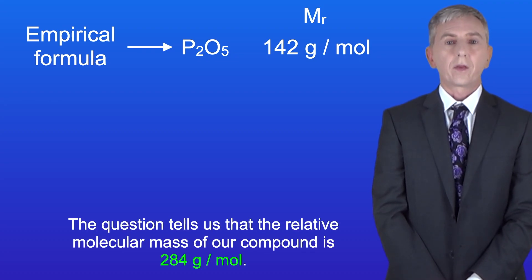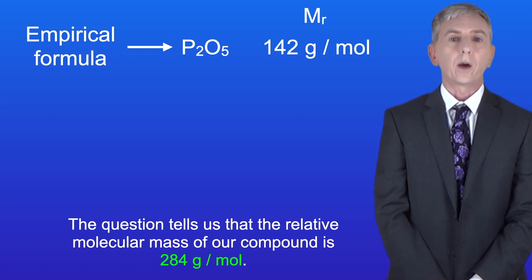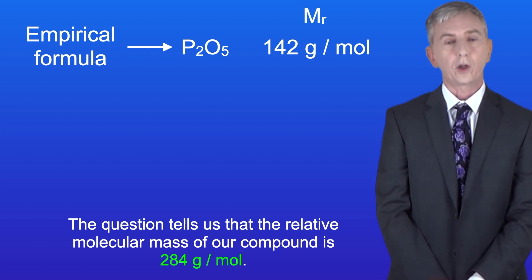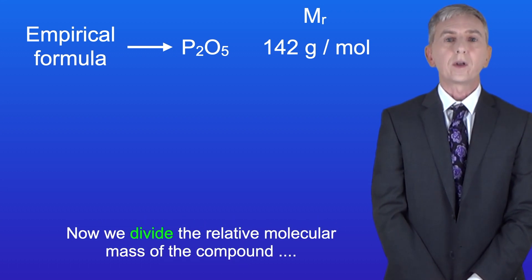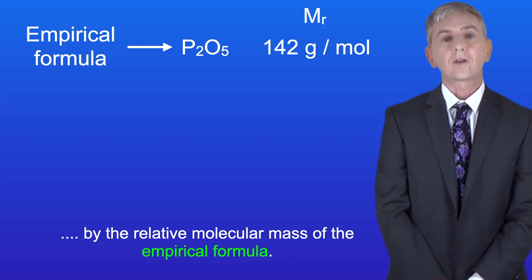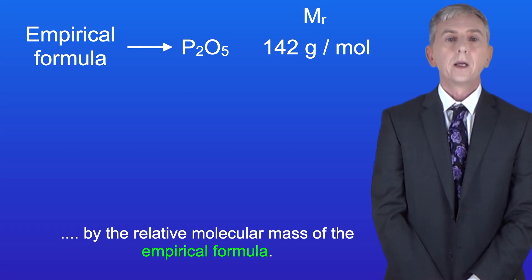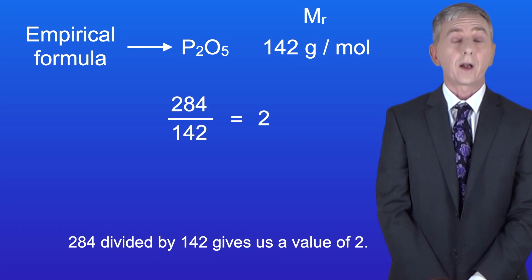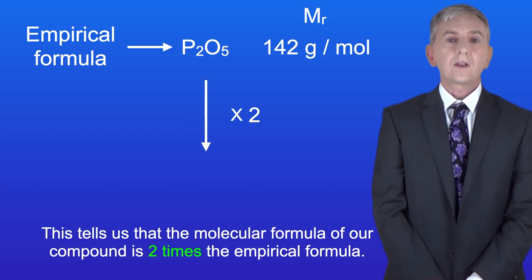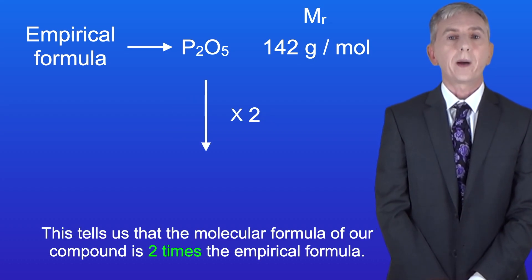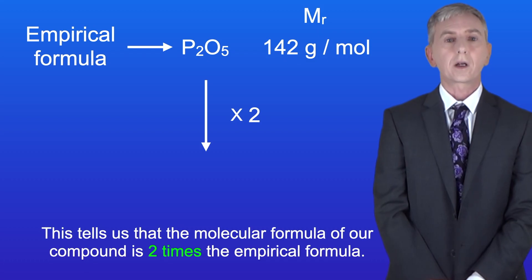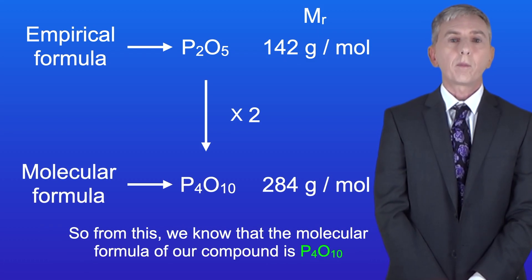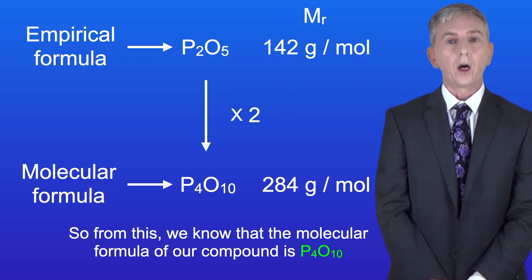The question tells us that the relative molecular mass of our compound is 284 grams per mole. So now we divide the relative molecular mass of the compound by the relative molecular mass of the empirical formula. 284 divided by 142 gives us a value of 2. This tells us that the molecular formula of our compound is 2 times the empirical formula. So from this we know that the molecular formula of our compound is P4O10.